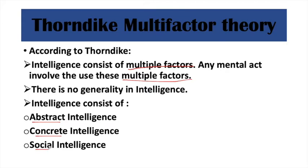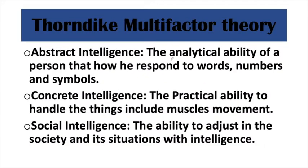Abstract intelligence is basically the analytical ability of a person — how they respond to words, numbers, and symbols, and how they store them in their mind for problem solving. Next is concrete intelligence, which is the practical ability of an individual in which muscle movement is involved and how efficiently they handle physical activities.